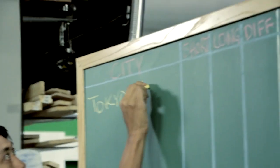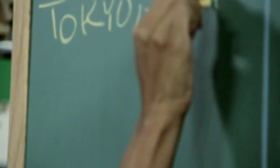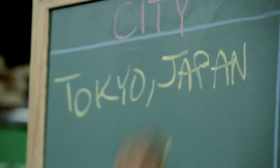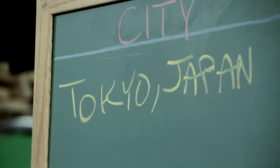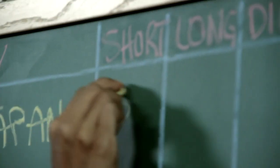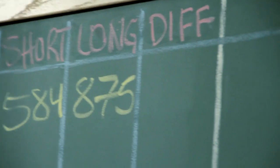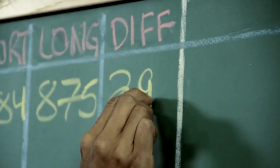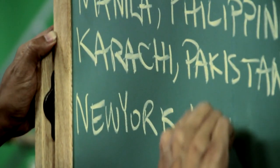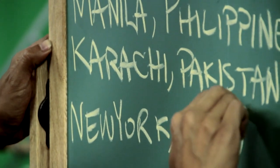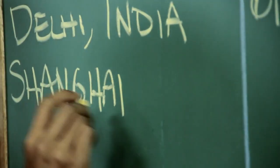Let's go. Tokyo, Japan. The shortest day is 584 minutes, the longest is 875 minutes, and the difference is 291 minutes. New York: the shortest is 555 minutes, the longest is 905 minutes, and the difference is 350 minutes.